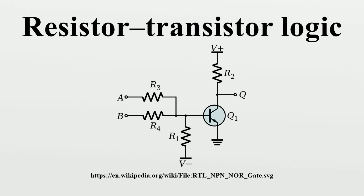Resistor-transistor logic is a class of digital circuits built using resistors as the input network and bipolar junction transistors as switching devices. RTL is the earliest class of transistorized digital logic circuit used. Other classes include diode-transistor logic and transistor-transistor logic. RTL circuits were first constructed with discrete components, but in 1961 it became the first digital logic family to be produced as a monolithic integrated circuit.